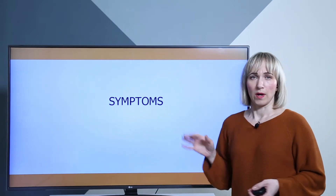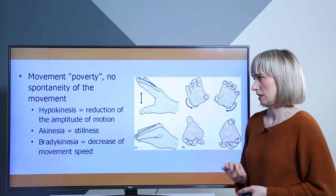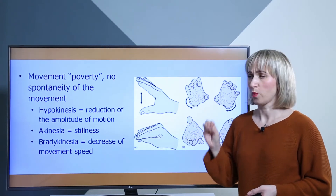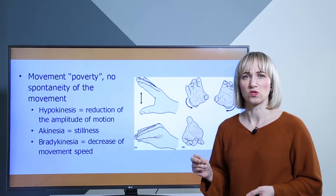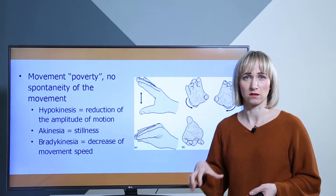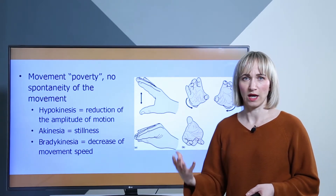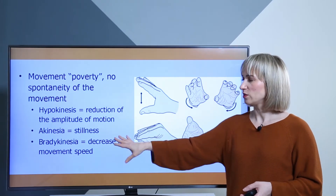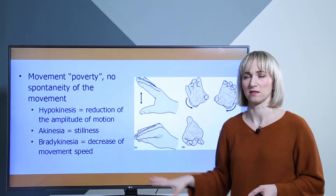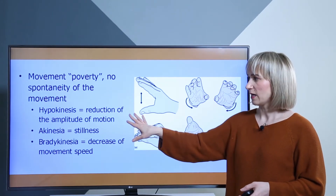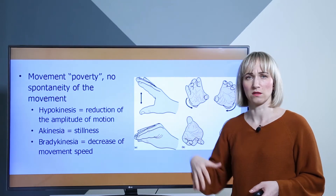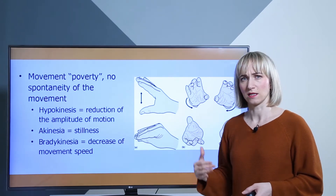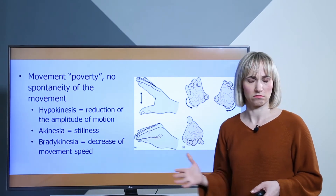We are going to talk about the four symptoms. First, we have poverty in movement. Parkinson's disease is a hypertonic, hypokinetic syndrome, which means the patient doesn't have spontaneous movement. It's typical to have three different symptoms: hypokinesia, which is the reduction of the amplitude of motion; bradykinesia, which is a decrease of movement speed; and akinesia, which is complete stillness and no movement at all.